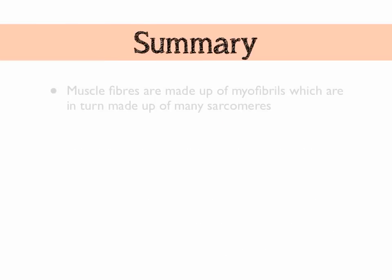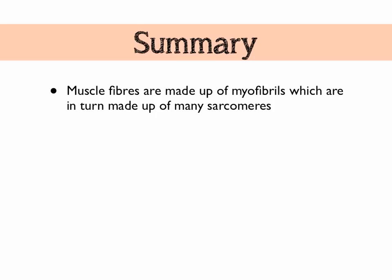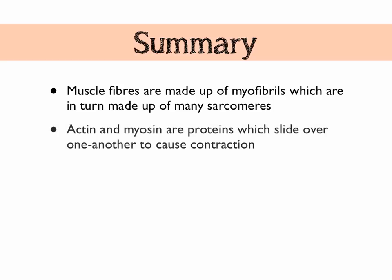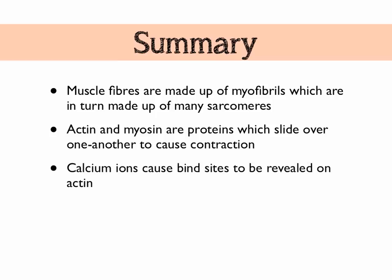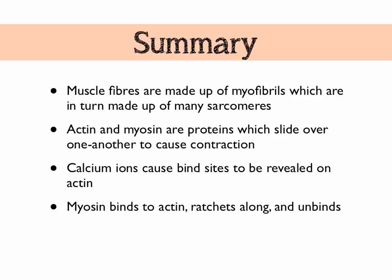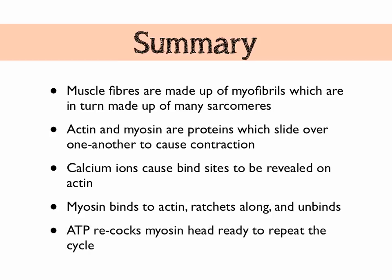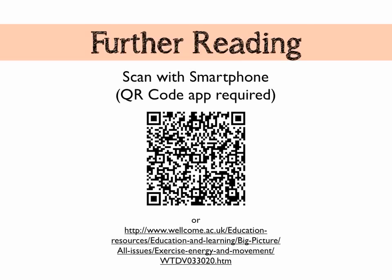To summarise: muscle fibers are made up of myofibrils, which are in turn made up of many sarcomeres — the contractile units. Actin and myosin are proteins which slide over one another to cause contraction in the sliding filament theory. Calcium ions cause binding sites to be revealed on actin; myosin binds, ratchets along, and then unbinds; ATP re-cocks the myosin head ready to repeat the cycle. For a much better animation of this process, visit the Wellcome Trust website — a link is provided — though note it may be Flash-based and may not work on iOS devices.